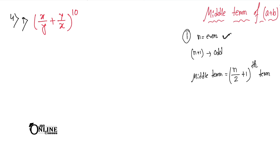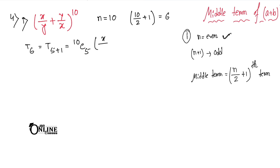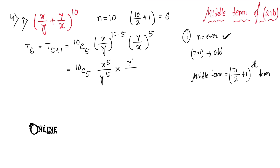Problem 4(i): Find the middle term in (x/y + y/x)^10. Since n = 10 is even, the middle term is T6 = T(5+1) = 10C5 · (x/y)^5 · (y/x)^5. The x and y terms cancel, giving 10C5 = 252 as the middle term.